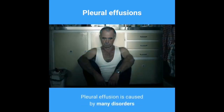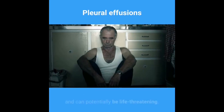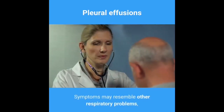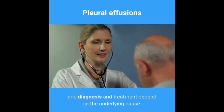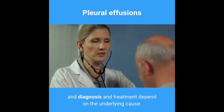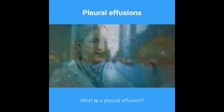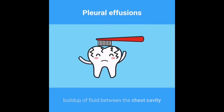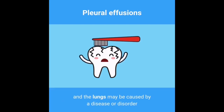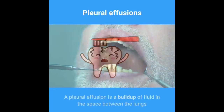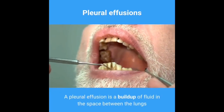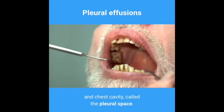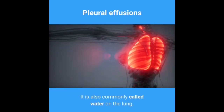Pleural effusion is caused by many disorders and can potentially be life-threatening. Symptoms may resemble other respiratory problems, and diagnosis and treatment depend on the underlying cause. A pleural effusion is a build-up of fluid in the space between the lungs and chest cavity, called the pleural space. It is also commonly called water on the lung.